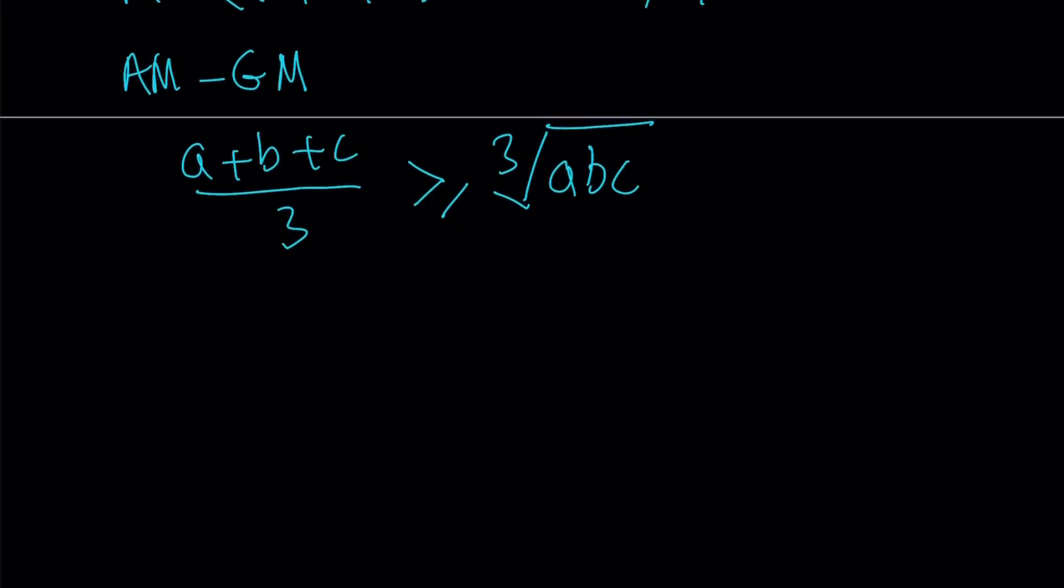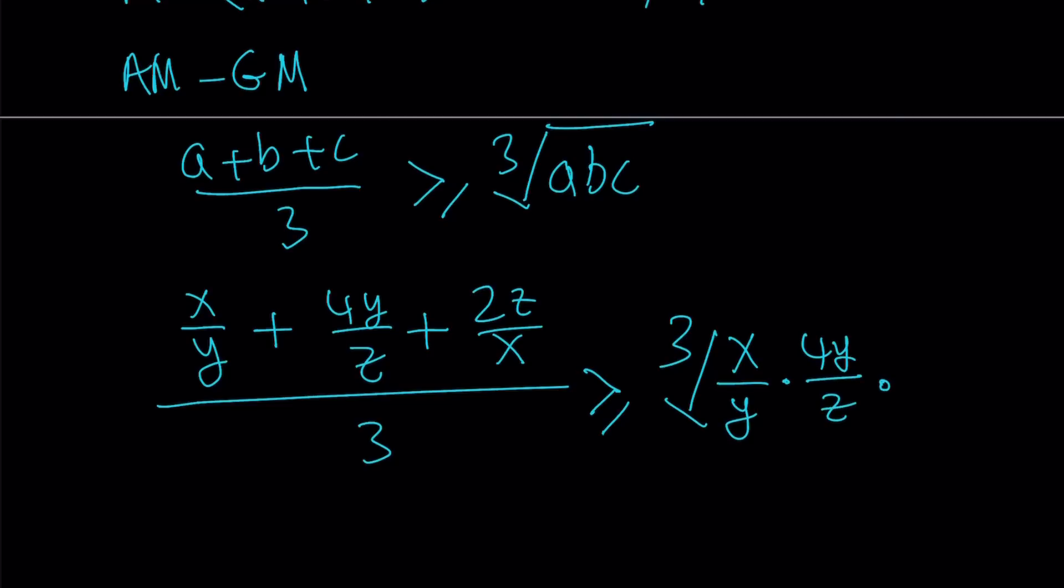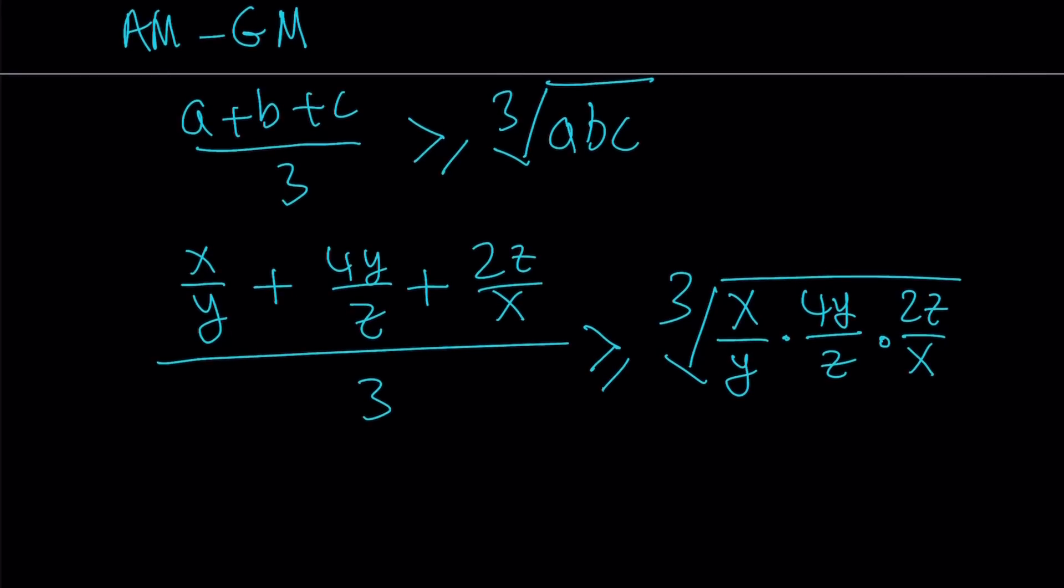I'm going to plug in all these values. So a is x over y, b is 4y over z, and c is 2z over x. I add them up and divide by 3, and this is supposed to be greater than or equal to the cube root of their product. This is where the fun part starts because when you multiply these expressions, pretty much all the variables cancel out. That's what's really cool about AM-GM is that you get these expressions and you can easily compare them.